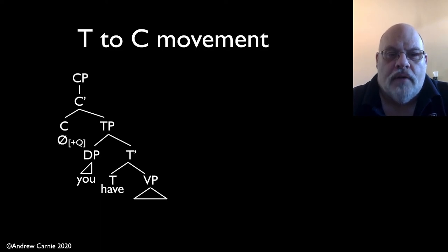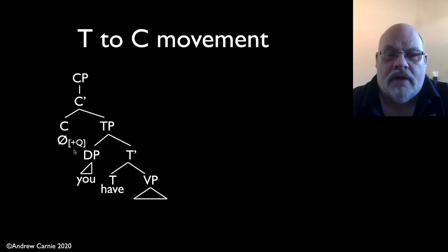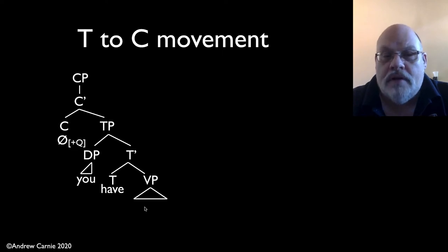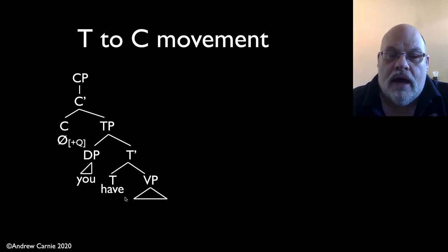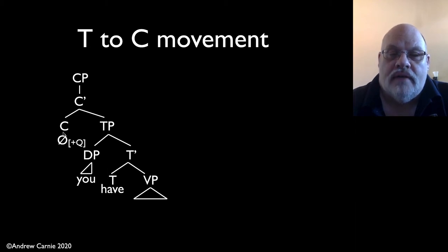Effectively, what we have is a head — a complementizer — which is marked as plus Q, indicating that this sentence is going to be a question. We have no content here in the complementizer in English, unlike other languages where you may have a particle. So we have to do subject-aux inversion in order to correctly spell out or produce something in the C position to indicate that it's a question. We do this by moving the head T into the head C. This is another instance of head-to-head movement — T to C — around the subject.